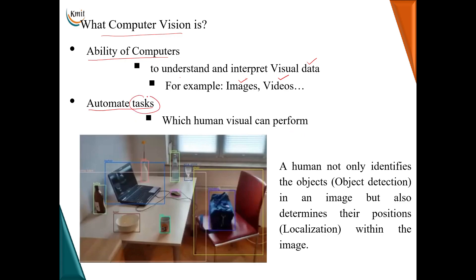What kind of tasks are we talking about? Consider the image shown. A human not only identifies the objects from this image but also determines their positions. Identification of objects from a given image is called object detection, and determining their positions is called localization. The main aim of computer vision is to make a computer perform these two tasks automatically.